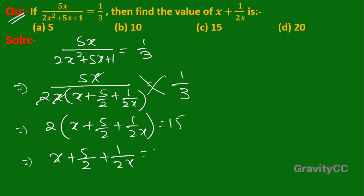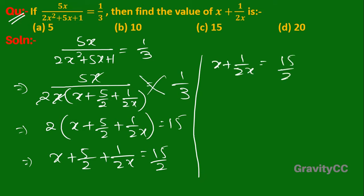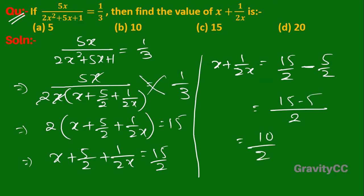So x plus 1 upon 2x equals 15 upon 2 minus 5 upon 2. Since 15 minus 5 equals 10 upon 2, that gives us 5, which is the required answer. So option A is the correct answer.